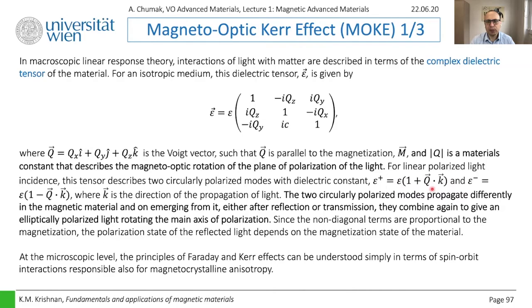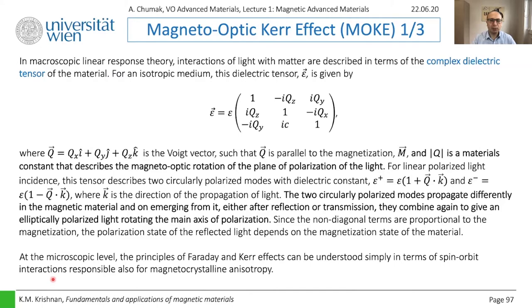The two circularly polarized modes propagate differently in the magnetic material, and on emergence — either after reflection or transmission — they combine again to give elliptically polarized light and rotate the main axis of polarization. These are the two effects we expect when we shine light on the surface. The very basic physics behind magneto-optical effects is again spin-orbit interaction — like it was for magnetic crystalline anisotropy. This will be the main mechanism behind spintronics effects, which we will discuss in the next lecture.